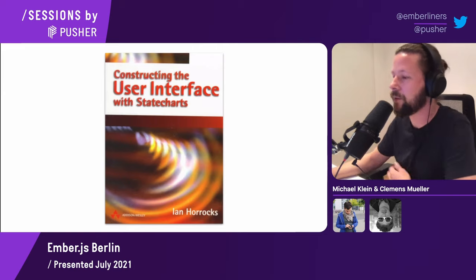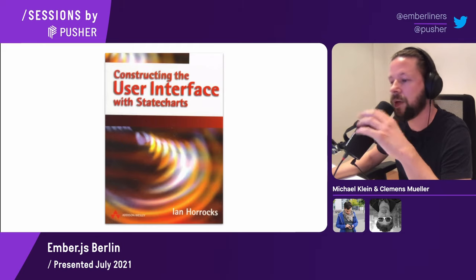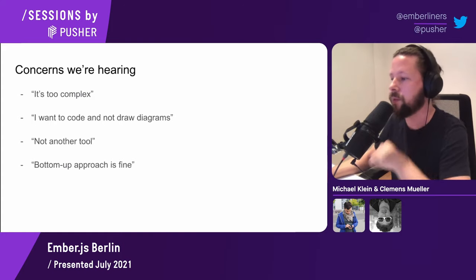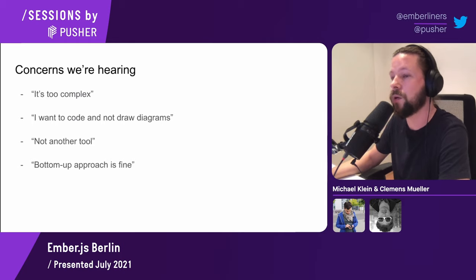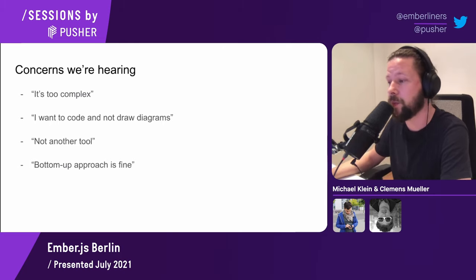We're now at the point where an argument for reactive systems has been made and the way to describe them via state charts has been introduced. At this stage, we always hear the same concerns. The most common response is that it's too complex and adds unnecessary complexity. A state chart describing a relatively small problem or even a supposedly simple form abstraction can look intimidatingly complex. Our argument is that state charts only make the implicit complexity of your system explicit. Just because you don't want to see how complex your app's behavior is doesn't mean that complexity isn't there. Also, we're dealing with reactive systems — they are inherently more complex than transformational ones.